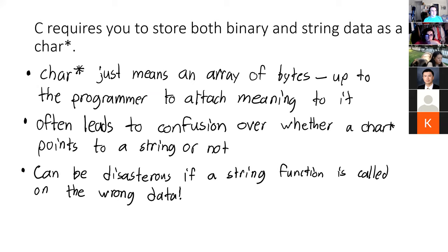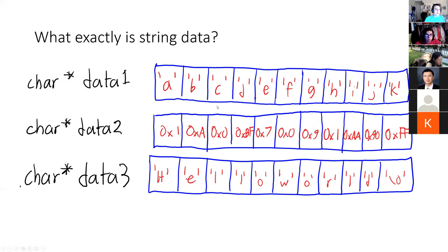Now let's talk about binary data and string data. C requires you to store both binary and string data as char pointer, because in their not infinite wisdom, they decided to make char the only 8-bit wide data type in C. So a char pointer really just means it's an array of bytes. And it's kind of up to you as a programmer to decide what that means. It often leads to confusion over if I have this char pointer variable, does it hold a string or does it hold bytes? It can really be a disaster if you get the wrong idea and something that you think is a string actually holds bytes.